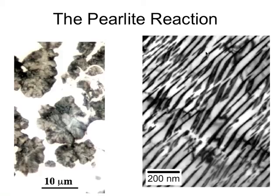If we partially transform to pearlite, you see these colonies of pearlite which are kind of spheroidal. At low magnification we are not resolving the lamellae, but in the transmission electron micrograph you see layers of cementite and ferrite.